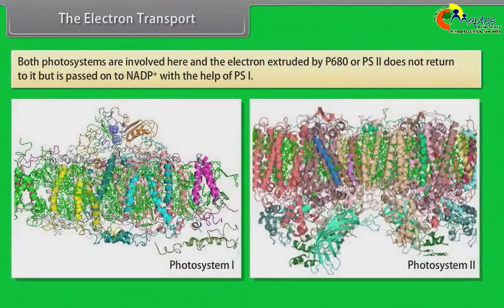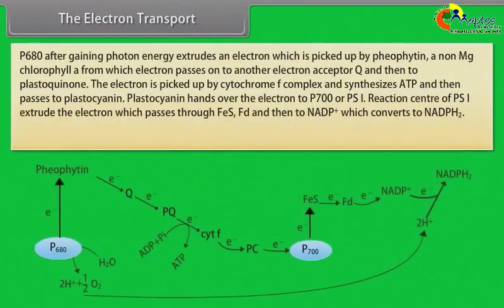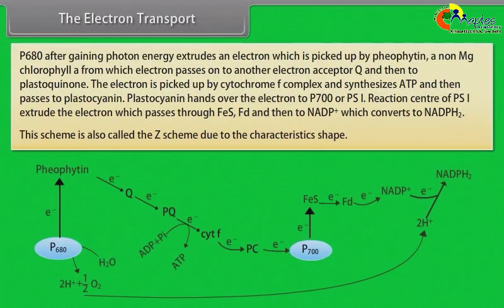Both photosystems are involved here. The electron extruded by P680 or PS2 does not return to it but is passed on to NADP+ with the help of PS1. P680, after gaining photon energy, extrudes an electron which is picked up by pheophyton, a non-Mg chlorophyll A, from which the electron passes to another electron acceptor Q and then to plastoquinone. The electron is picked up by cytochrome F complex, synthesizes ATP, then passes to plastocyanin. Plastocyanin hands over the electron to P700 or PS1. The reaction center of PS1 extrudes the electron which passes through FES, FD, and then to NADP+, which converts to NADPH + H+. This scheme is also called the Z-scheme due to its characteristic shape.